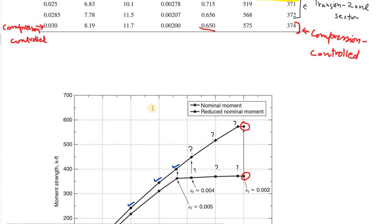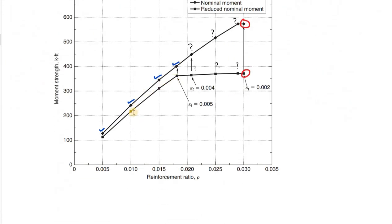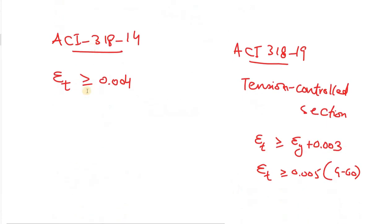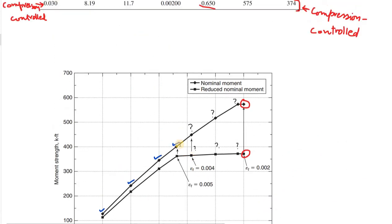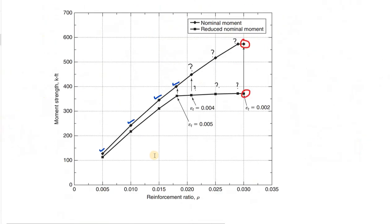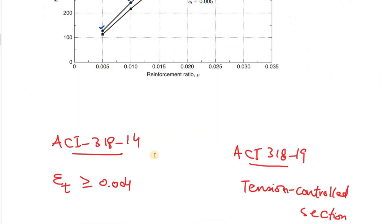This is how steel ratio affects M_N and phi M_N. The very important point was that it is not economical to design beyond that limit. This requirement will give an economical cross-section. This is the end of this discussion. Thank you.